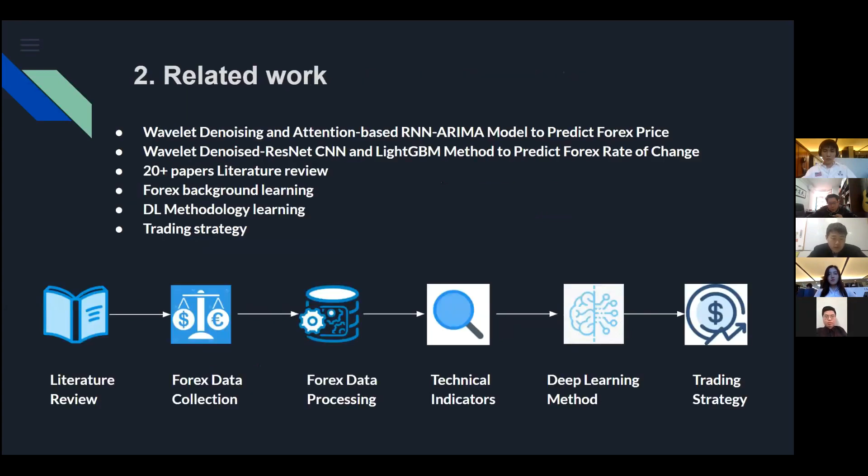I will talk about what related work we do in this project. We divided our work into different stages and create our milestones. Here is our workflow. The first part is the literature review. We did much research in the stock prediction and the forex prediction area. Thanks to these two papers of Dr. Cushing, we knew the right way to do the project and successfully replicated models of 20 papers. The next stage is the forex data collection and processing.